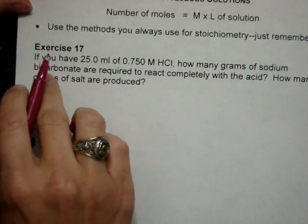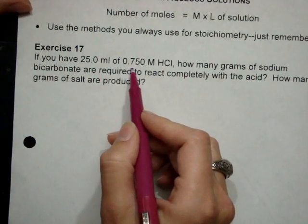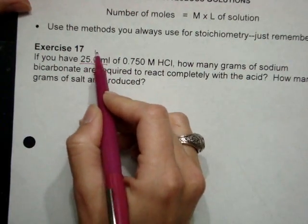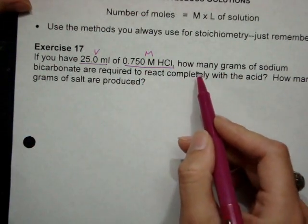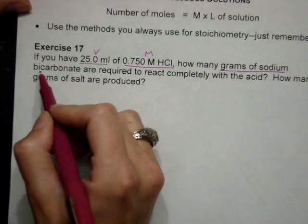So for this equation, or for this question, you have 25 milliliters of 0.75 molar. So there's a volume, and there's a concentration, HCl.